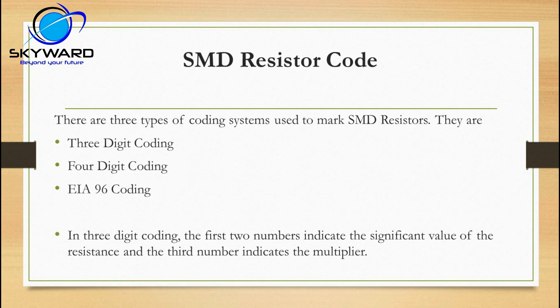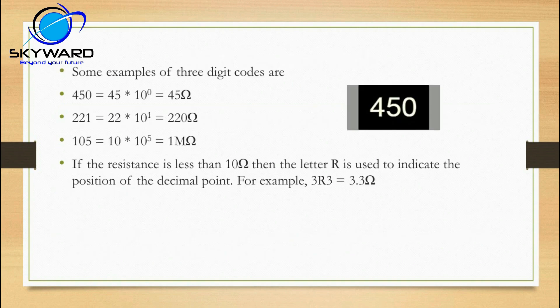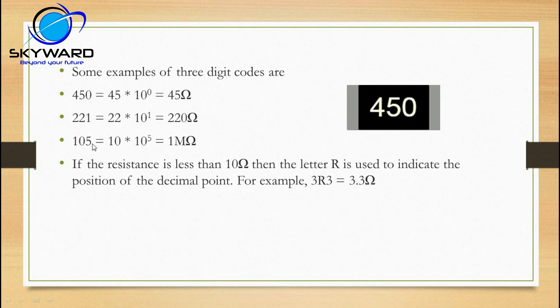How to calculate the resistor value when three-digit coding is used: the first two digits are placed as they are, and the third digit is the multiplier as a power of 10. For example, 450 means 45 multiplied by 10 to the power 0, which is 45 ohm. 221 means 22 multiplied by 10 to the power 1, which equals 220 ohm.